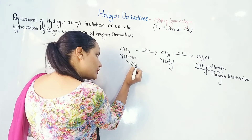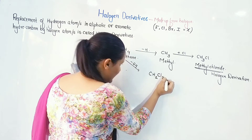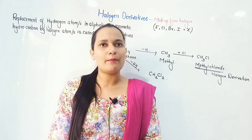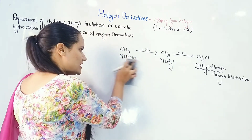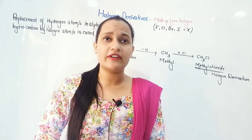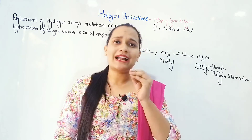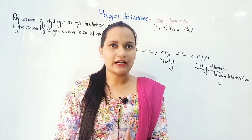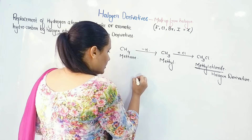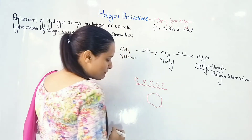In the same compound, if I want, I can eliminate two hydrogens. If I remove two hydrogens, I will get CH2, and since the carbon needs two bonds, I place Cl2 there — I am replacing hydrogen by halogen. Now, look at the definition of a halogen derivative: it is the replacement of a hydrogen atom or hydrogen atoms, and that replacement can happen in any aliphatic compound or in an aromatic compound.